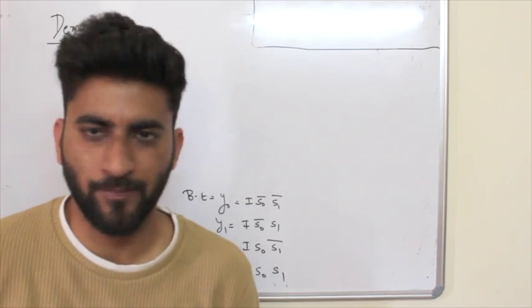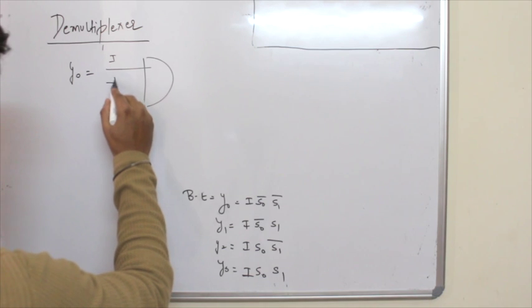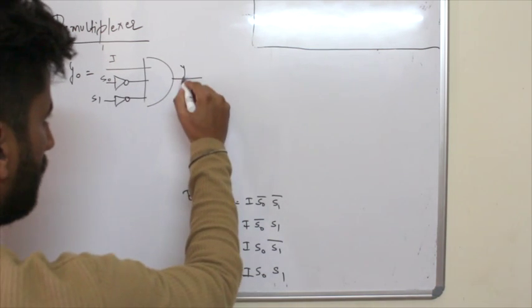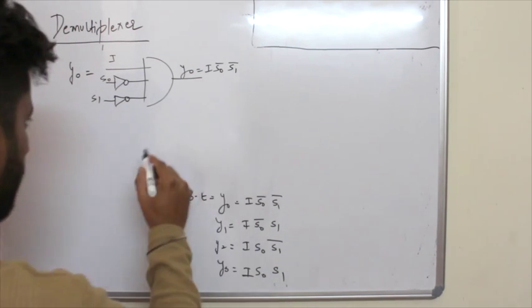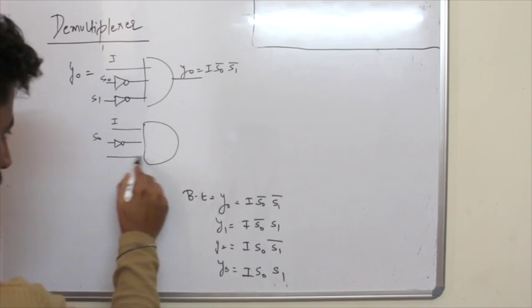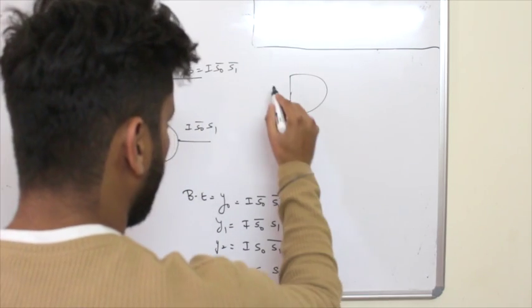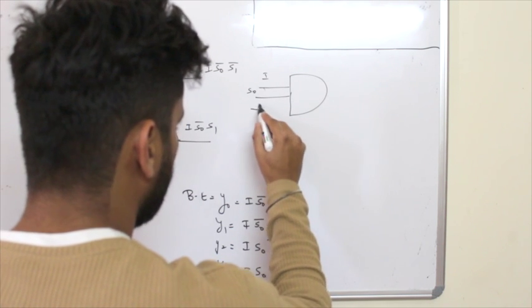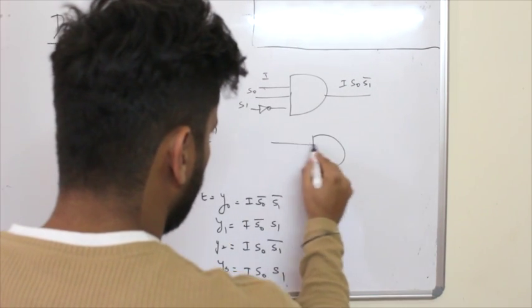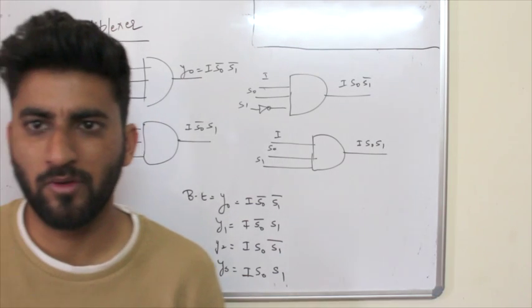Okay, after getting these four outputs y0 y1 y2 y3, we have to implement this and it's very simple. All you have to make these four diagrams. Okay, so we have for y0 we have and gate, input is i, then s with the not gate, and then we have s0 s1. Okay, so this will give you y0 which is i s0 bar s1 bar. After that we have y1, that is i, we have s0, and then we have s1. This will give you i s0 bar s1. Then we have this is y2 with i s0 and then s1. This will give you i s0 s1 bar. Okay, and then we have y3 with i s0 s1. i s0 s1. That's it. This is the implementation part of demultiplexer. Thank you.